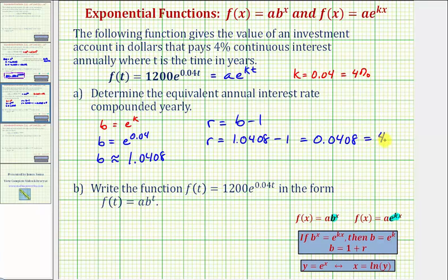Converted to a percentage, we would have r equals 4.08%. So 4.08% interest compounded annually would be equivalent to earning 4% continuous interest. The equivalent annual interest rate is 4.08%.